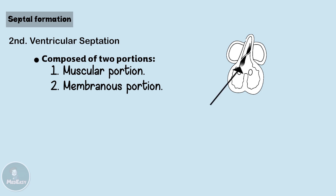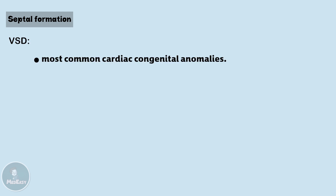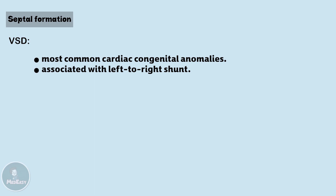The membranous portion is formed by a structure known as the aorticopulmonary septum, which in addition to forming the membranous portion of the septum also separates the aorta and pulmonary artery as the name suggests. Ventricular septal defects are the most common congenital cardiac anomalies, occurring in around 1 per 200 live births, and this defect is associated with a left-to-right shunt.